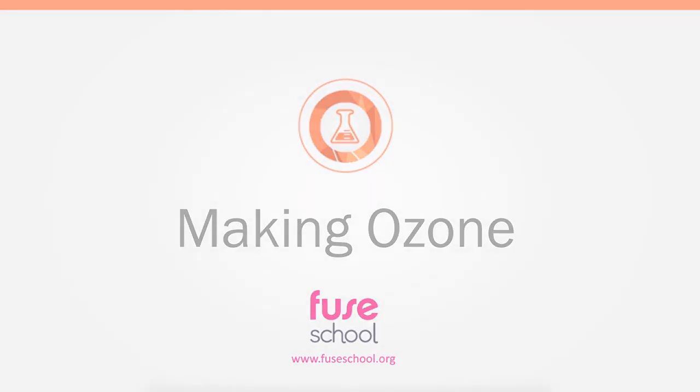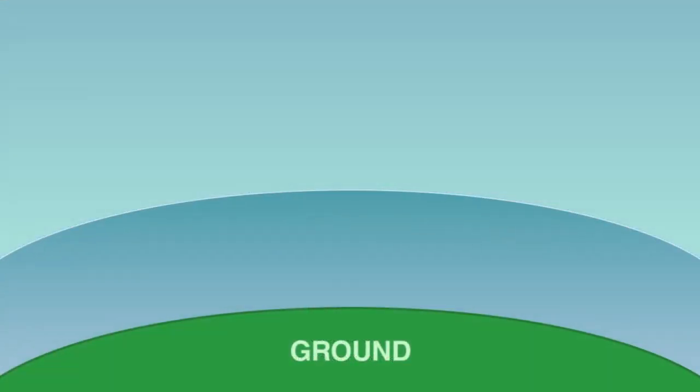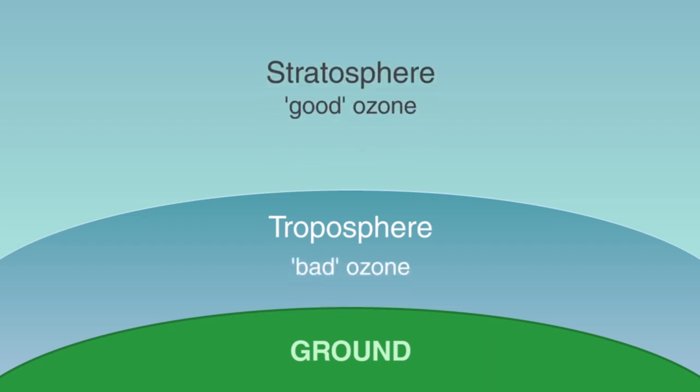In this video we will learn about the two main layers of our atmosphere, the troposphere full of weather and bad ozone, and above that the stratosphere where good ozone protects us against dangerous ultraviolet light.